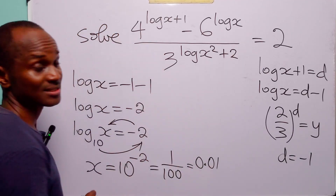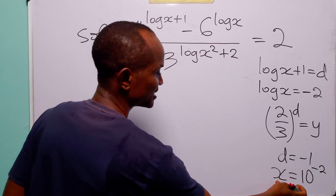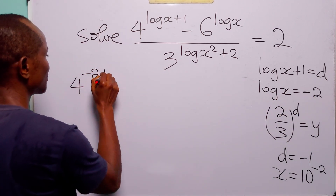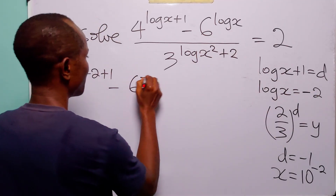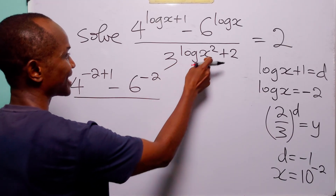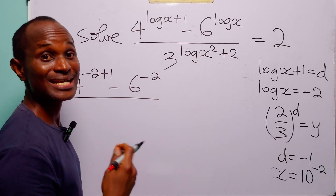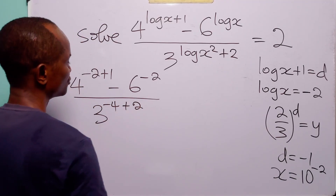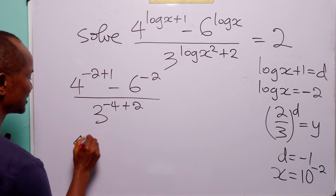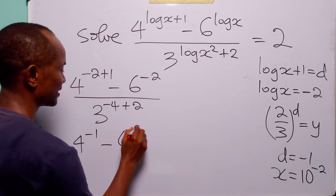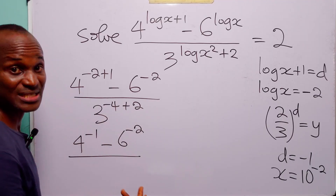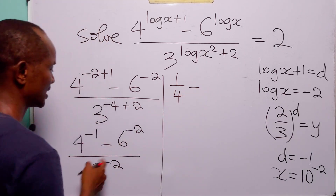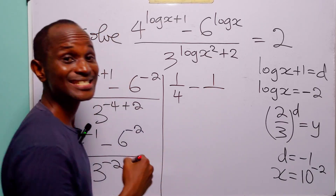To verify, we substitute x equals 0.01 back into the original equation. Since log x equals minus 2, we have 4 to the power minus 2 plus 1, minus 6 to the power minus 2, divided by 3 to the power 2 times minus 2 plus 2. Applying the power rule, log x squared equals 2 log x equals minus 4. So the exponents simplify: 4 to the power minus 1, and 3 to the power minus 2.